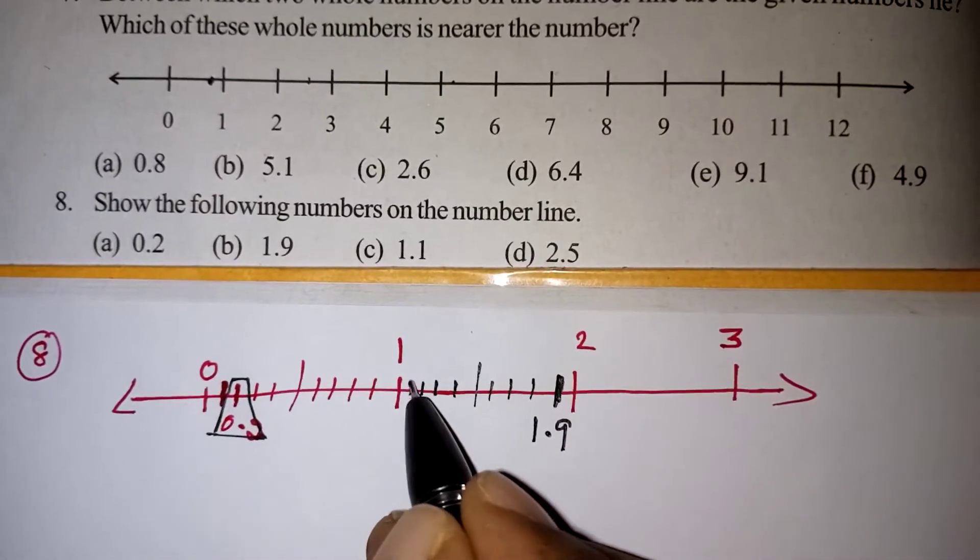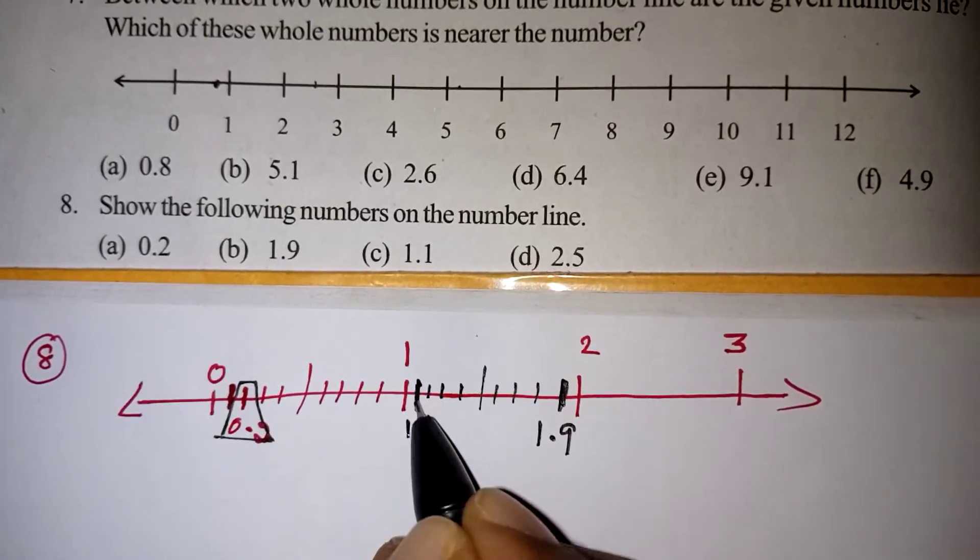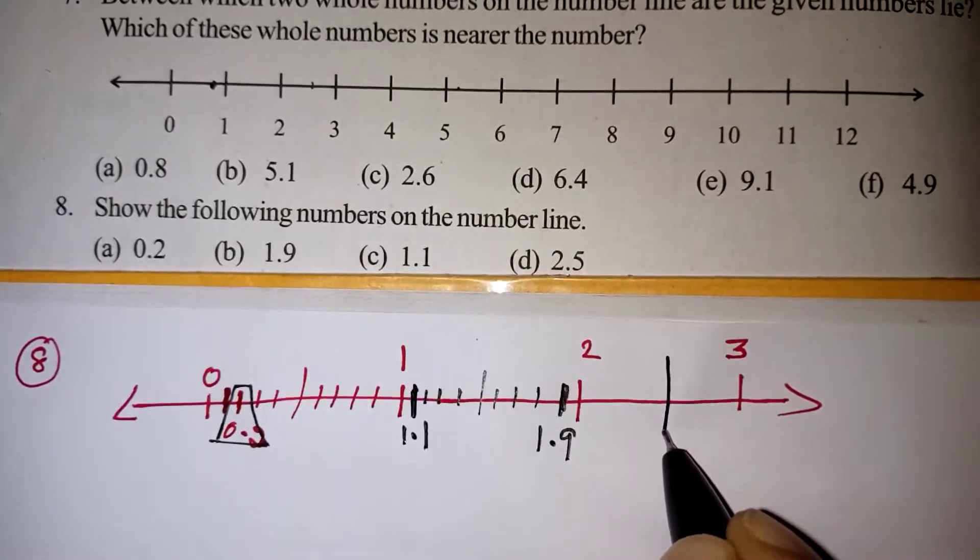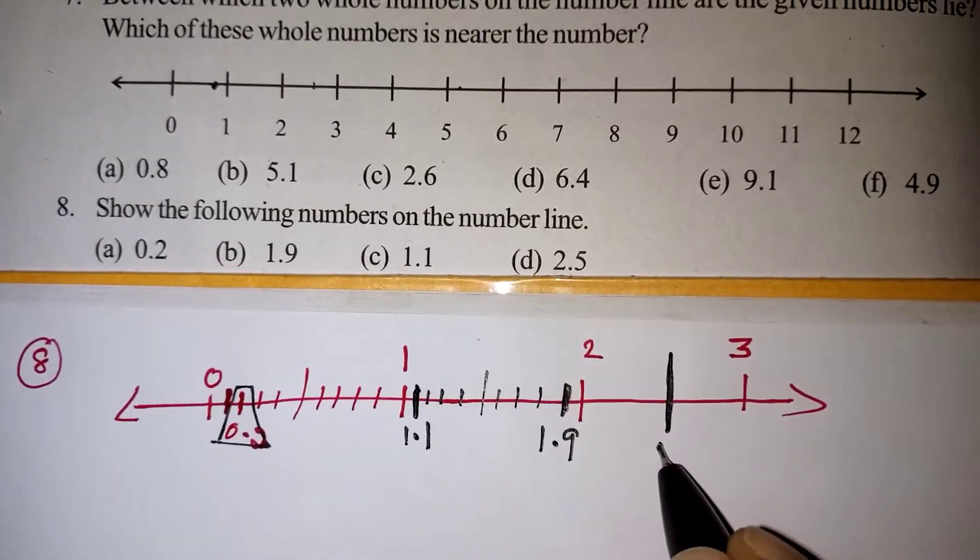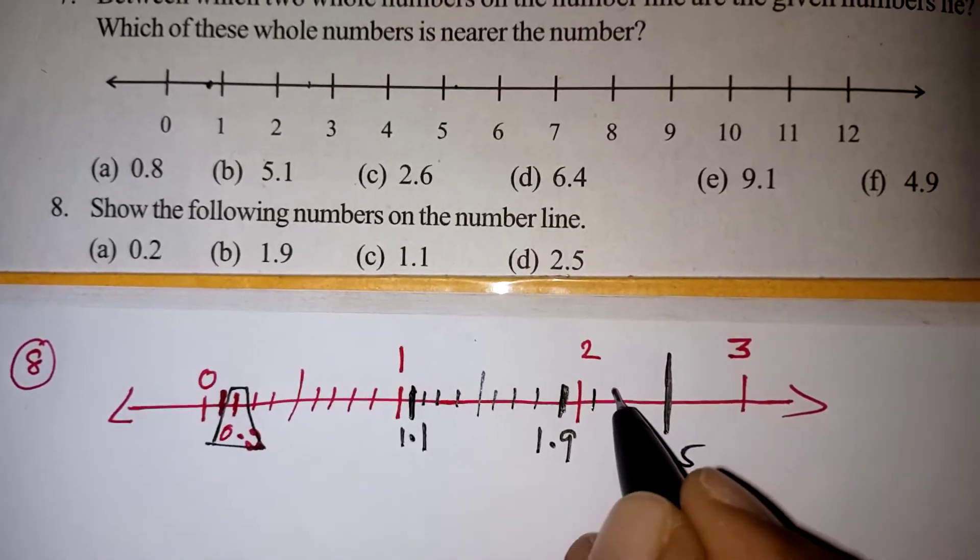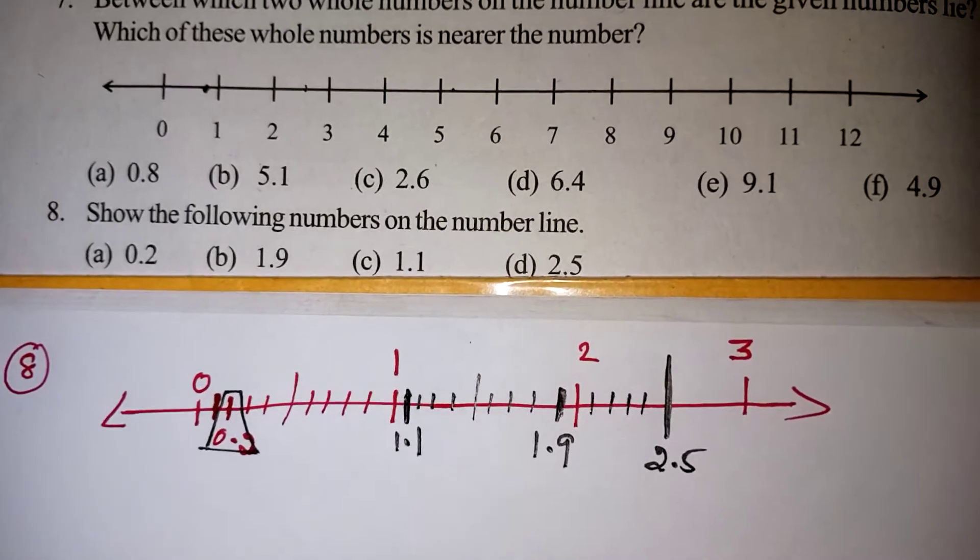1.1, so after 1, immediately the next number will be called 1.1. This is your 1.1. Then 2.5 will come exactly in between 2 and 3. This will be 2.5, the fifth line from 2: 1, 2, 3, 4, 5. 2.5 will be this one. Like this we have to draw.